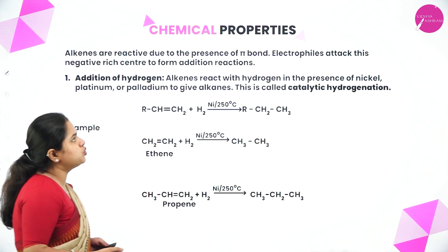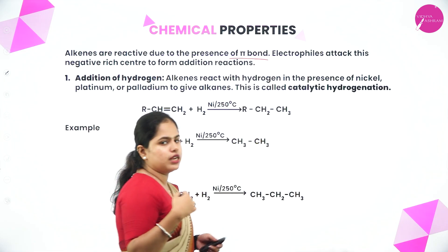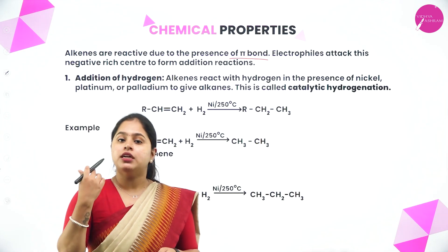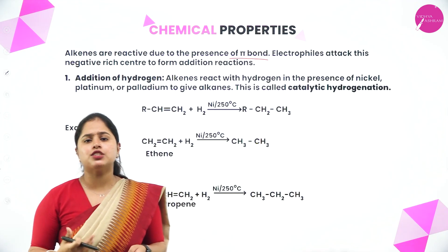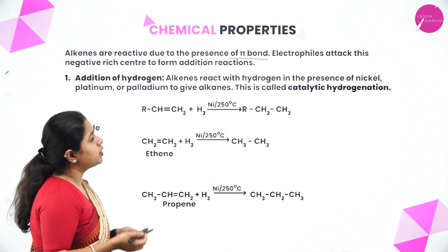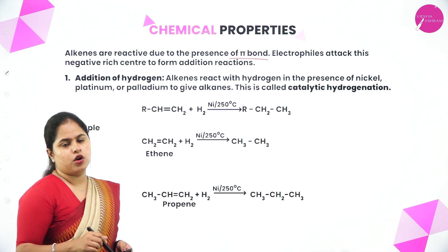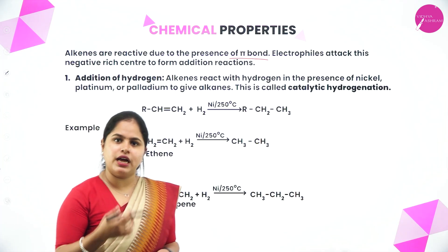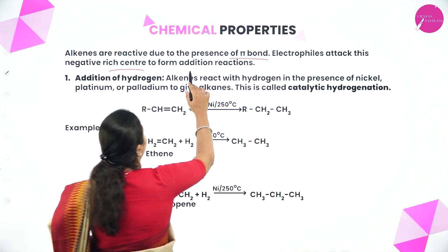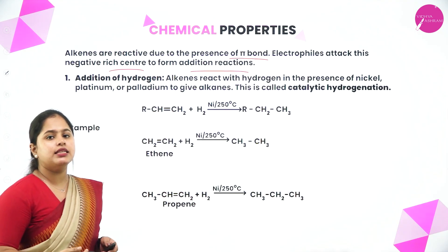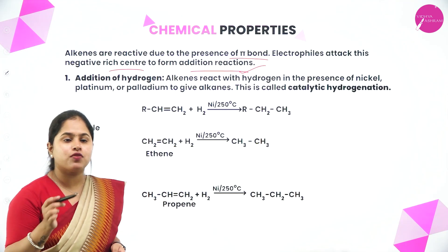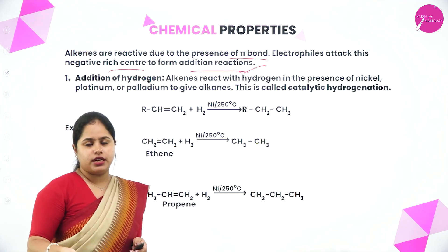Alkenes are reactive due to the presence of the pi bond. Alkenes contain double bonds; they are unsaturated hydrocarbons which contain at least one double bond. Due to the presence of this pi bond or pi electrons, they are more reactive than alkanes. Electrophiles attack this negative electron-rich center to form addition reactions. So alkenes undergo addition reactions because electrophiles will attack these negative electron-rich centers.